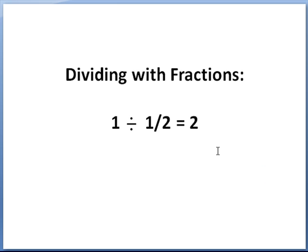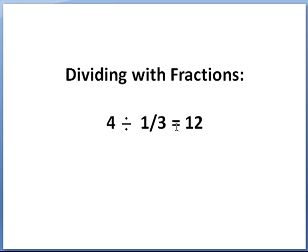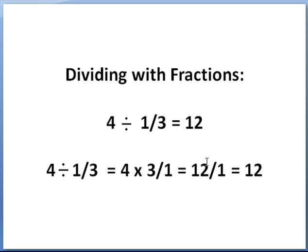Dividing with fractions: 1 divided by 1 half equals 2, because 1 half will go into 1 two times. To divide, we simply flip the fraction — so 1 half becomes 2 over 1 — and then it's multiplication: 1 times 2 equals 2. Any number over 1 is that number. Another example: 4 divided by 1 third equals 12, because 1 third will go into 4 twelve times. 4 times 3 over 1 equals 12 over 1, which equals 12.